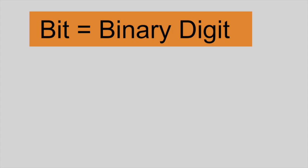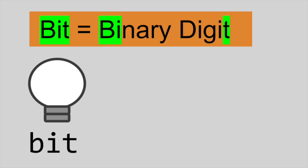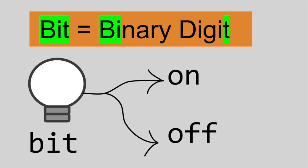The smallest unit of data in a computer is the bit. The word bit is short for binary digit. Like a light bulb, a bit could be one of two states, on or off.